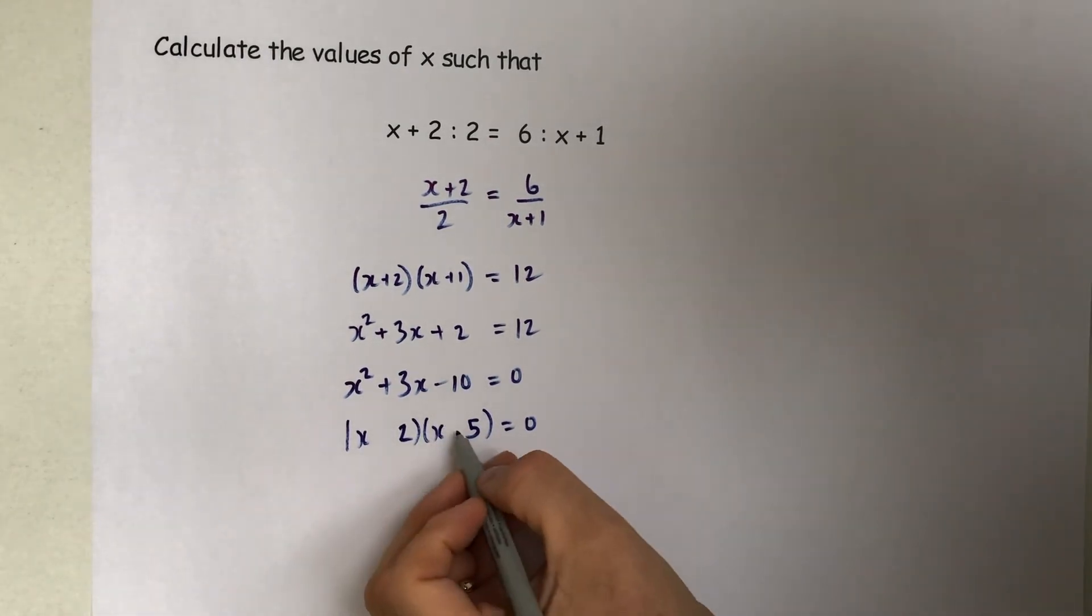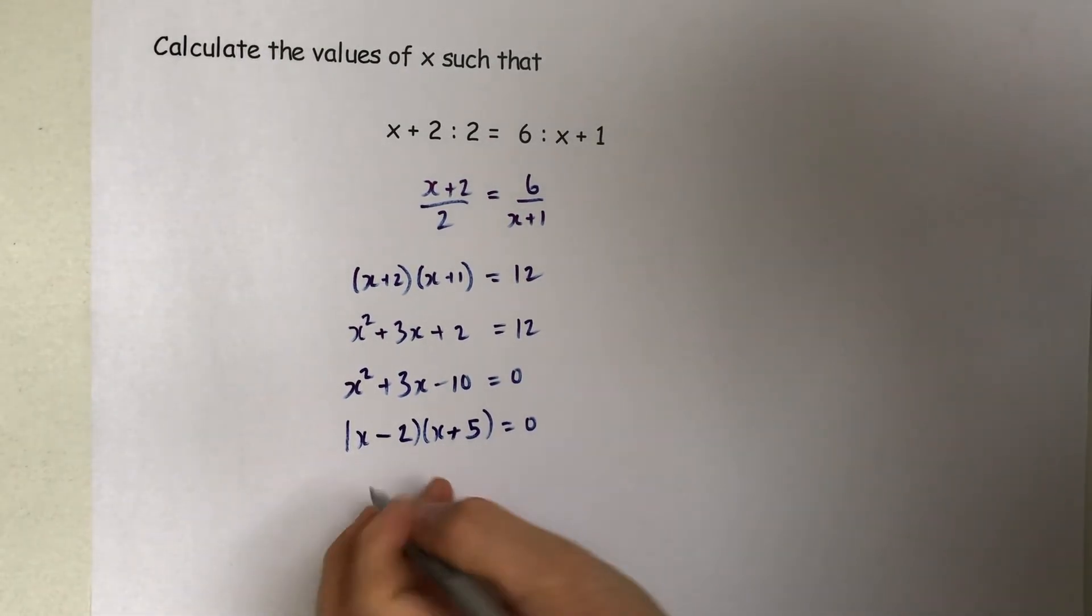If I make the 5 a plus and the 2 a minus, we will get 5x take 2x, we'll get the 3x in the middle.